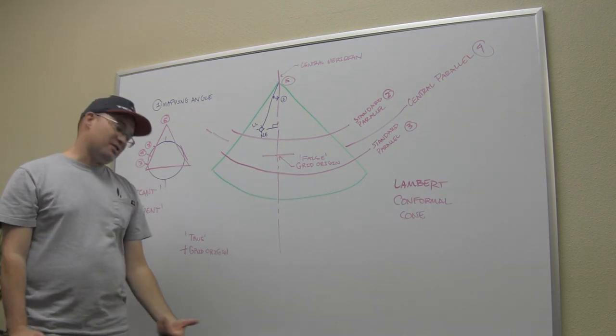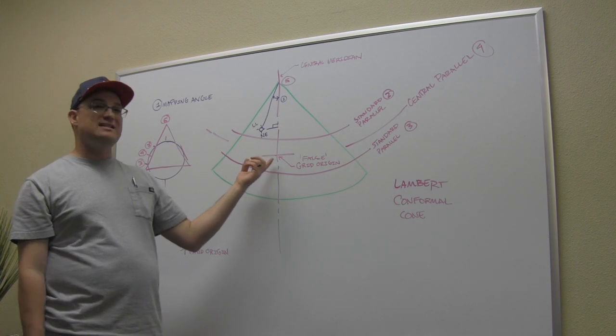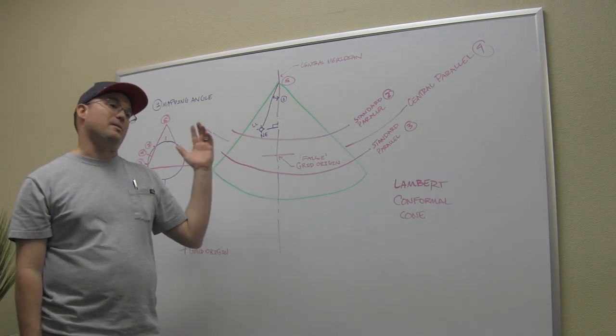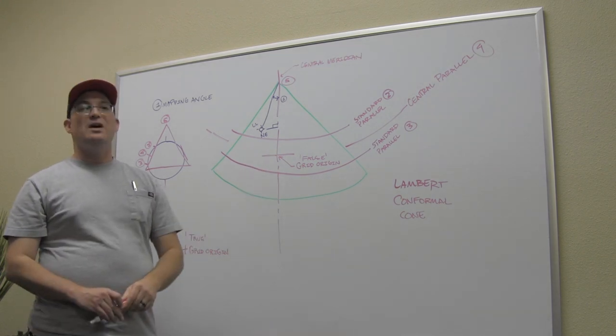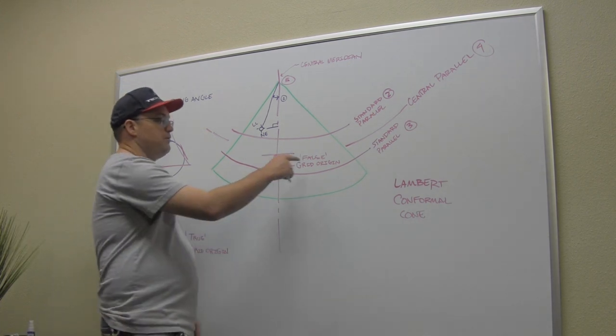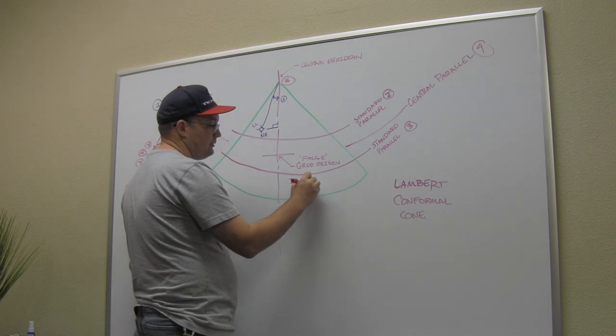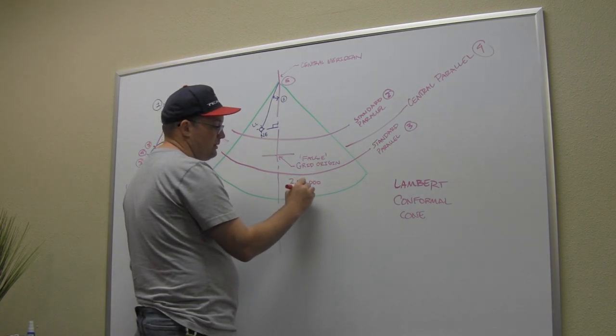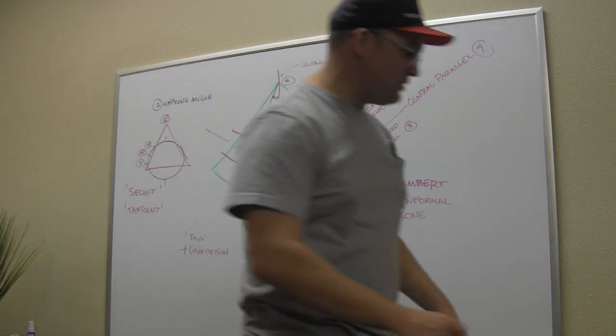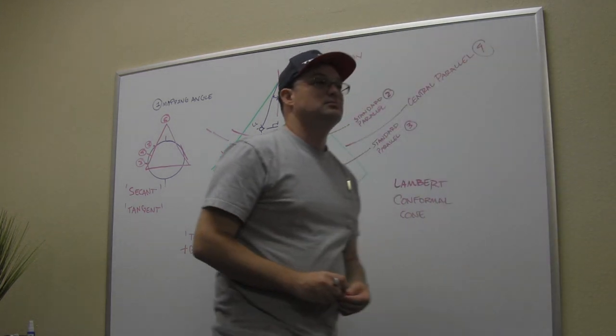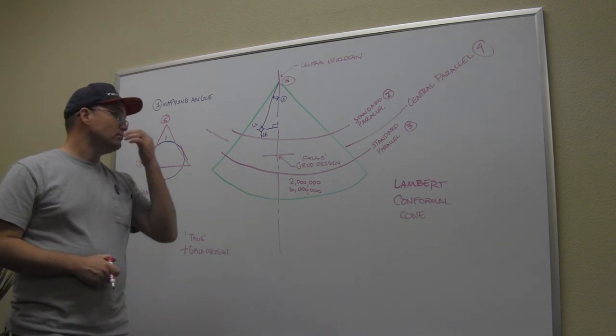Believe it or not, for some cursed reason, all of our state plane zones are laid out in metric. So this has some nice even metric value, like 500,000 by 500,000 or something. But we don't work in meters, we work in feet. So as a general rule, this zone has a false northing and easting of 2 million in the northing and 6 million in the easting. When you convert to feet, that's what you get.